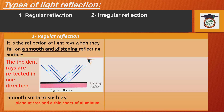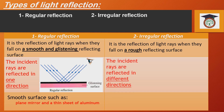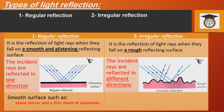The other type is irregular reflection. This is the reflection of light rays when they fall on rough reflecting surfaces. The incident light rays are reflected in different directions. Examples of rough surfaces include leather, leaves of trees, clothes, or walls. We can see the object only as a result of this reflection, but we cannot see our image.